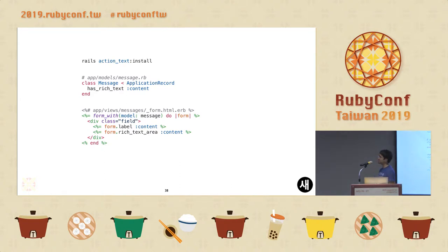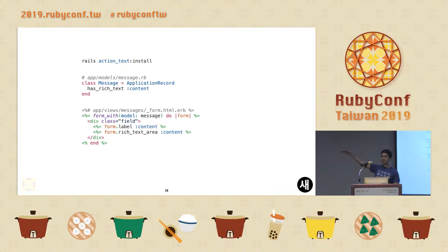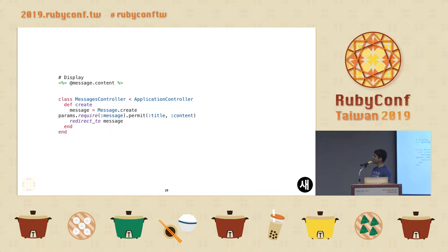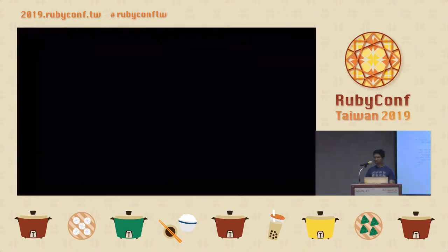You can start by running rails action_text:install, which will generate a migration to store the content. If you upload images or other files, it also supports Active Storage. Basically, you just have to do two things: in your model, say has_rich_text with the field name you want; and in your forms, use rich_text_area with the field where you want to get input. Then you can easily display the HTML or formatted content by just accessing that field. In your controller, you would just permit that particular field.